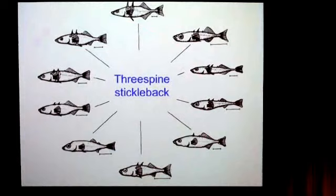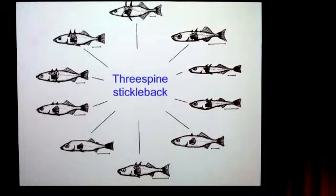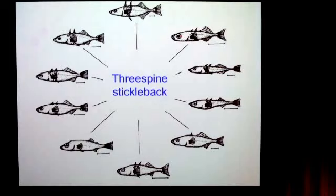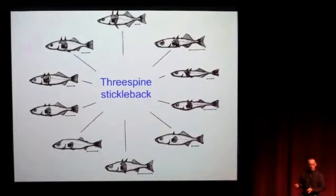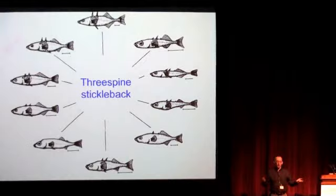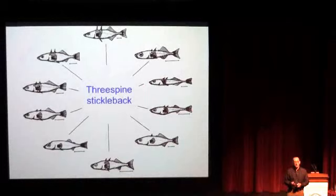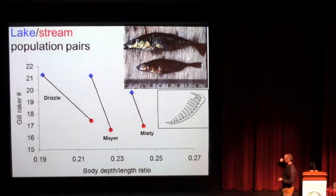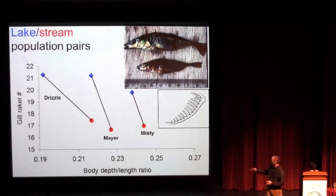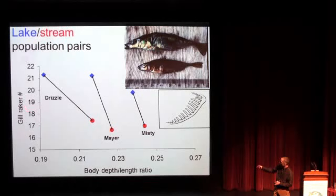Much of our current understanding of ecological speciation started with work on three-spine stickleback, particularly by Dolph Schluter. These fish colonized a bunch of freshwater environments from a common marine ancestor and show amazing divergence in morphology and a whole host of characteristics between different freshwater populations. All of this evolved since the last glaciation — maybe 10,000 years. The part of that radiation I study is how stickleback adapts to lakes and streams.